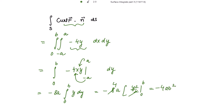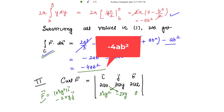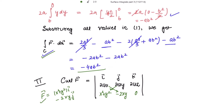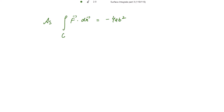The value of the right hand side of the Stokes theorem is minus 4ab squared, which is the same as the left hand side, the line integral of F vector dot dr vector, also minus 4ab squared. Since the values of the integrals on both sides are equal, the Stokes theorem is verified. As the line integral equals the surface integral of curl F dot n vector ds, hence the Stokes theorem is verified.